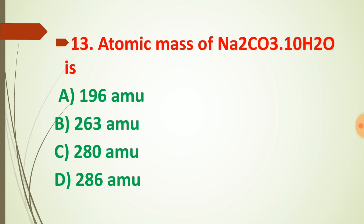Question number thirteen: atomic mass of Na₂CO₃·10H₂O. Add the mass of Na multiplied by 2 (that is 23 × 2), then add carbon, oxygen, and 10 times the mass of H₂O to get your answer. Try to find this answer by yourself — for any confusion, you can comment below.